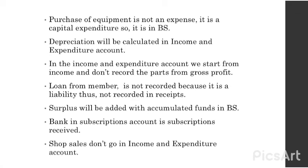In the income and expenditure account we start from income and don't record purchases or gross profit — we only record income and expenses. Loan from members is not recorded as it is a liability. The surplus will be added to the accumulated fund in the balance sheet. The subscriptions account will be covered in the next topic.